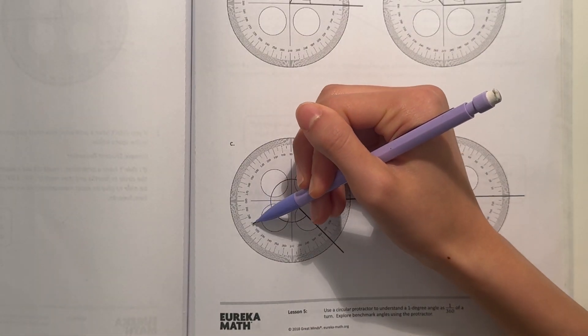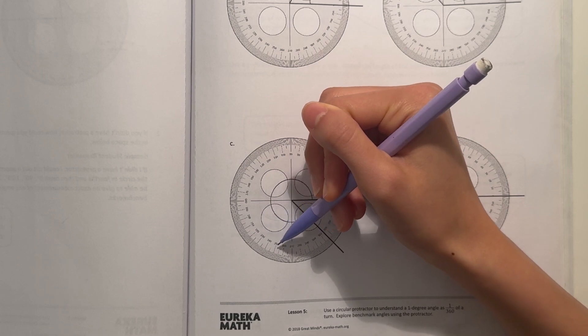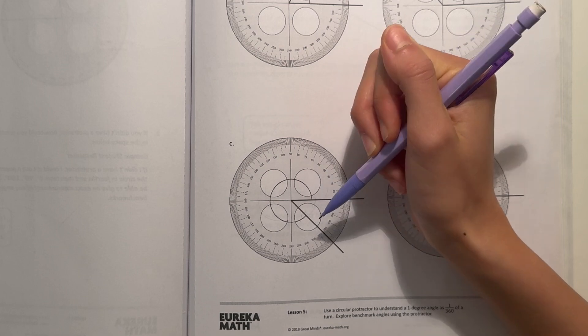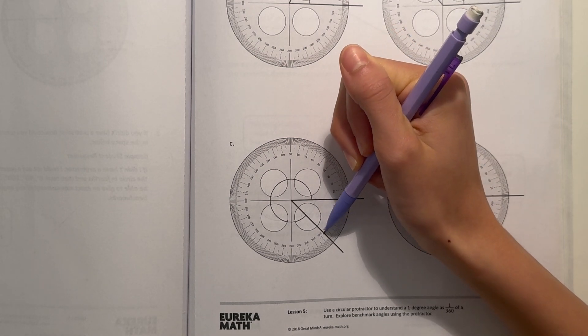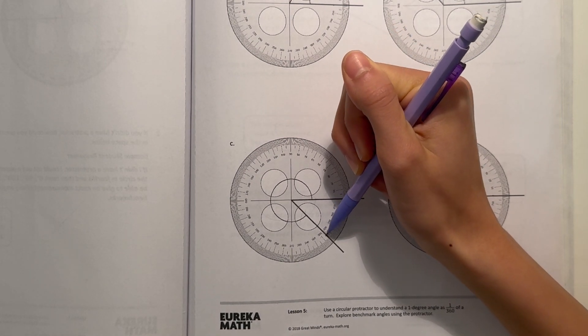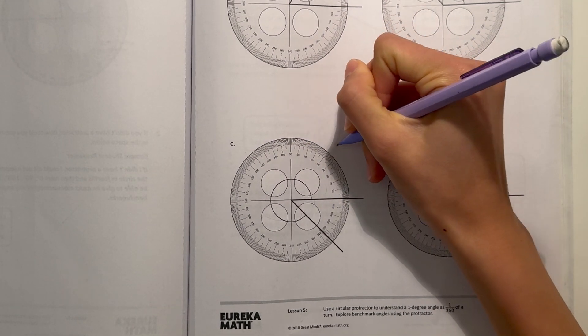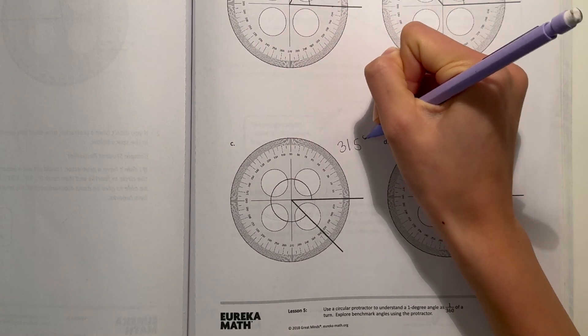180, 190, 200, 210, 220, 230, 240, 250, 260, 270, 280, 290, 300, 310, and this lands in the middle of 310 and 320. So the halfway mark between 310 and 320 would be 315, so this would be 315 degrees.